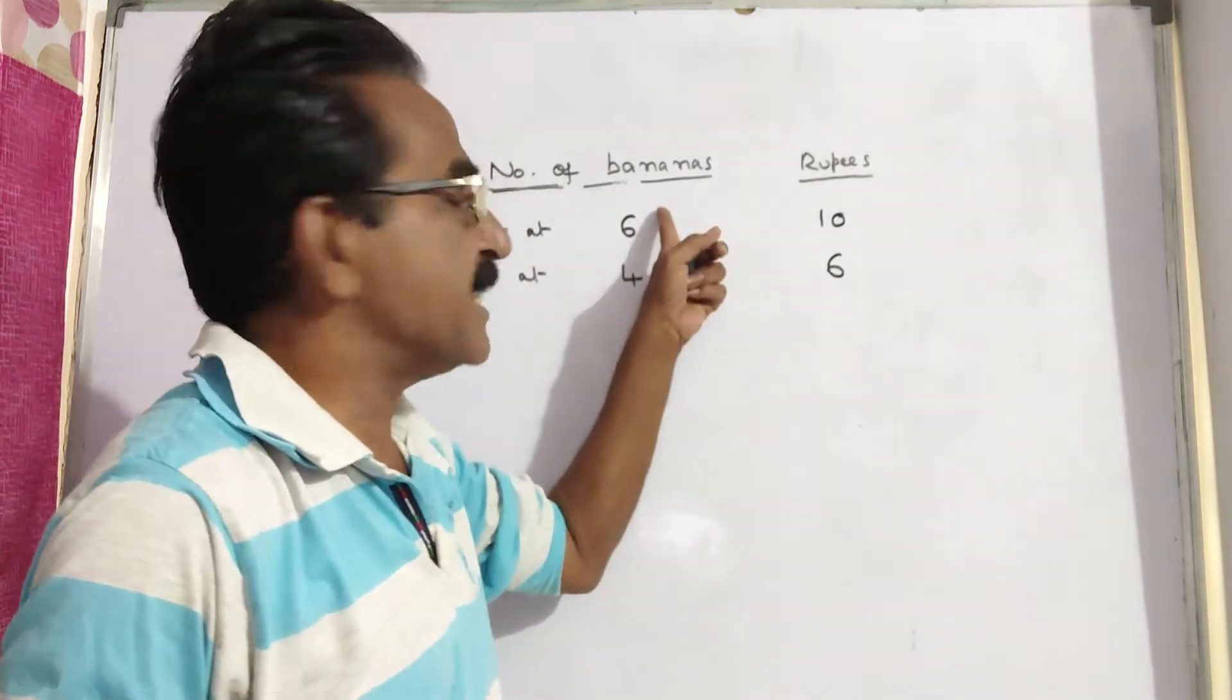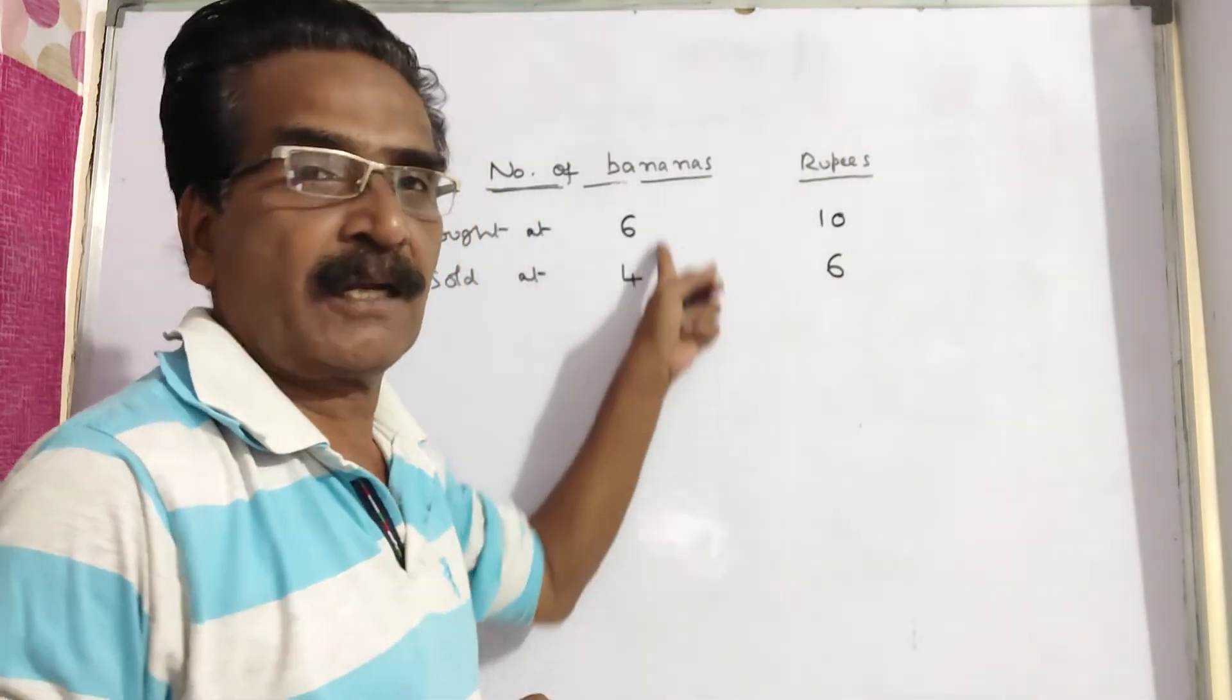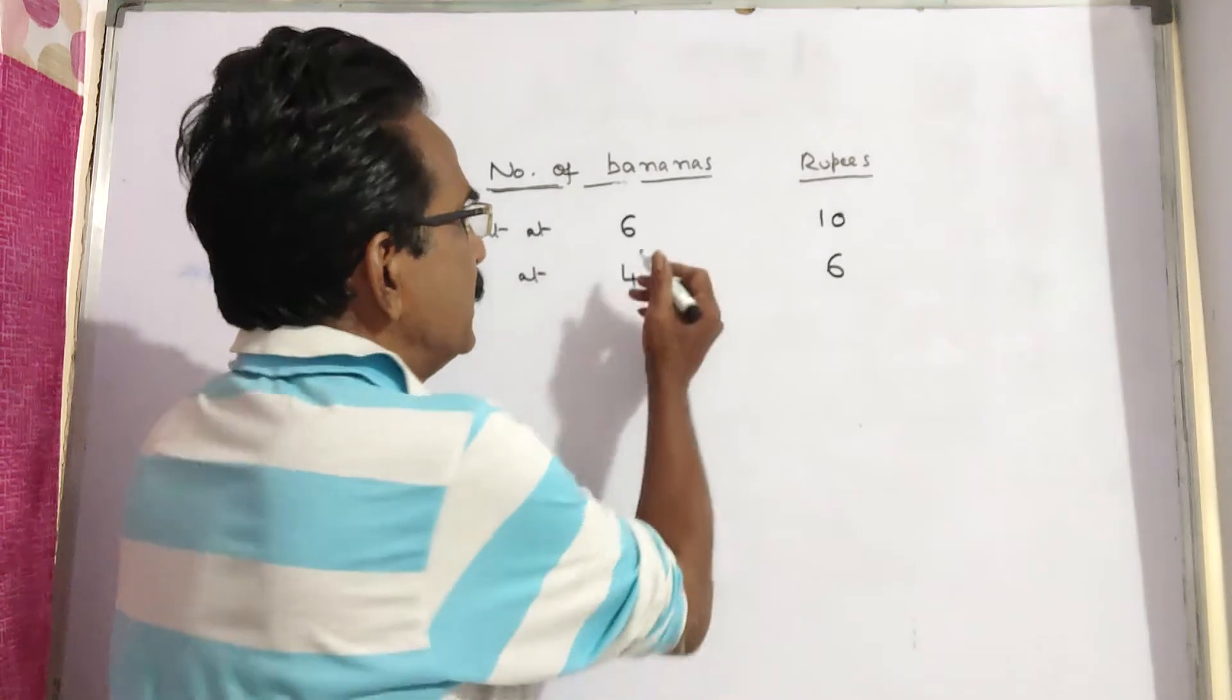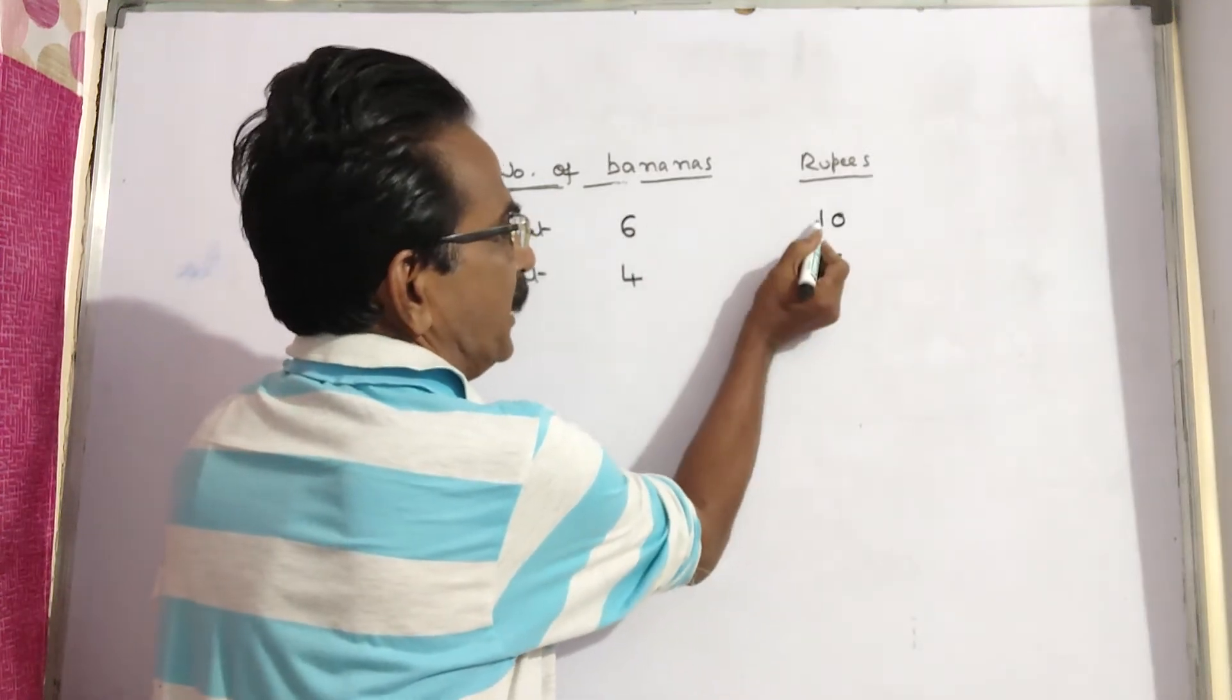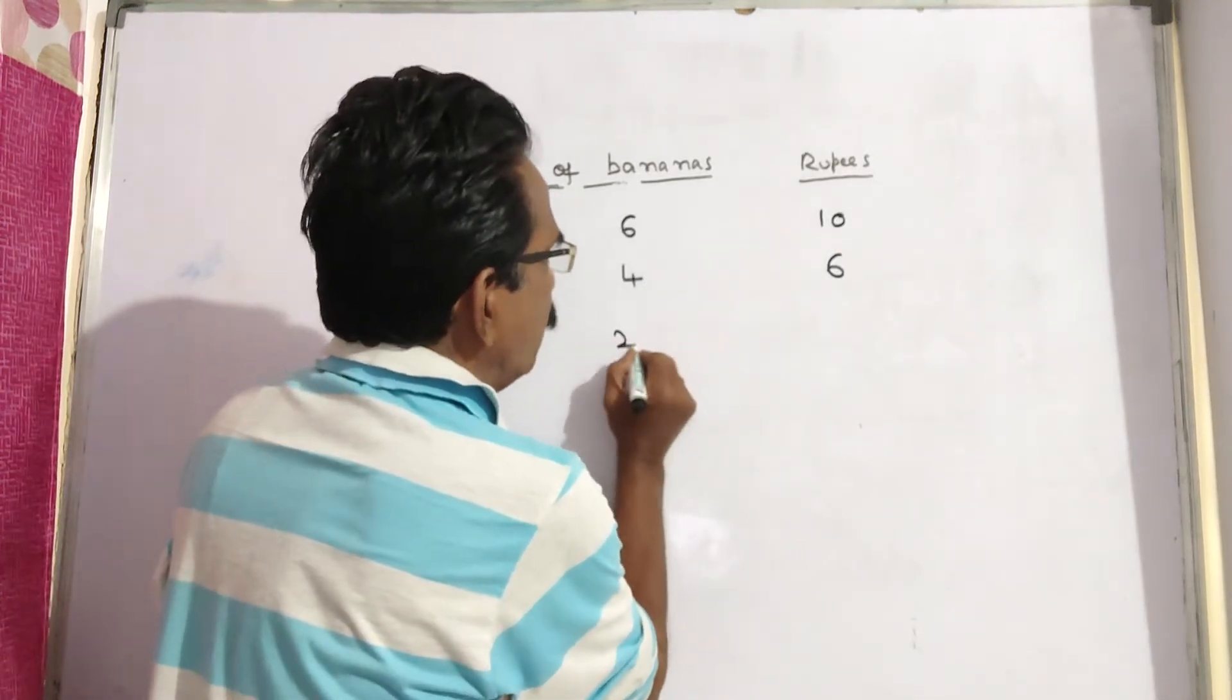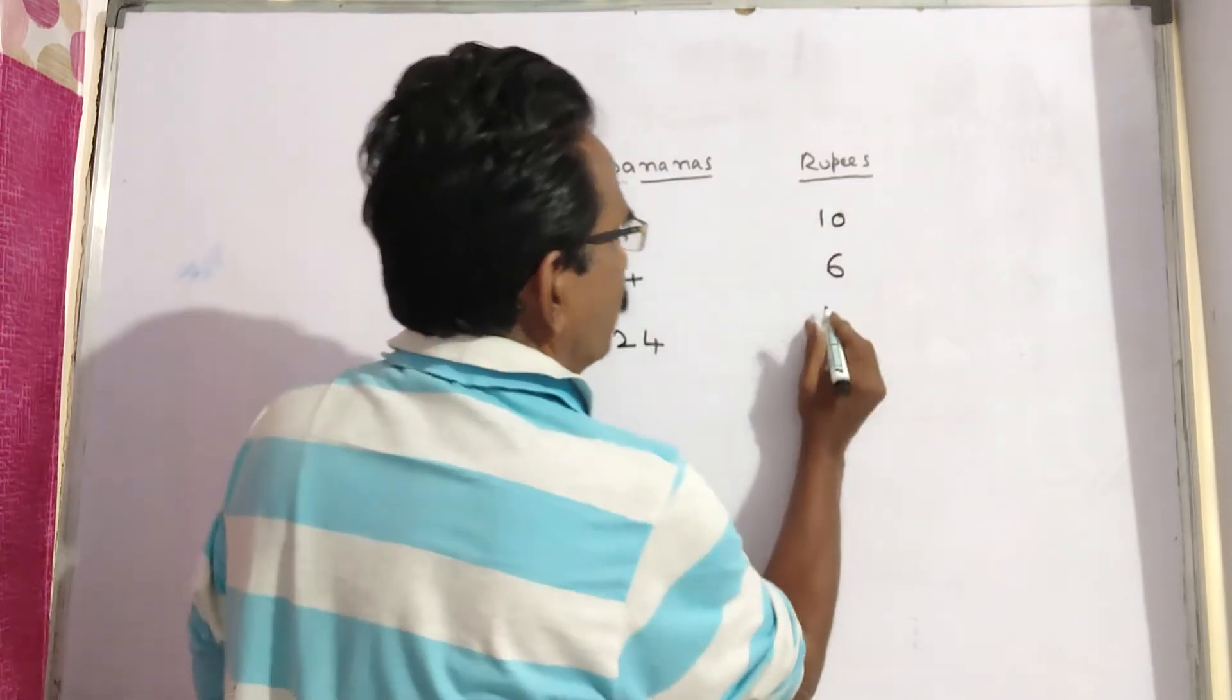Now the first thing is let us equal the number of bananas in both the statements. See, multiply the first statement with 4: 4 sixes, 24 bananas, 4 tens,